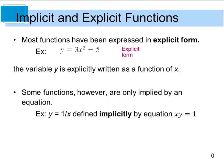Most of the functions that we've dealt with have been expressed in what we call the explicit form. In other words, y has been explicitly written as a function of x. An example of this is just right here where y equals 3x squared minus 5.